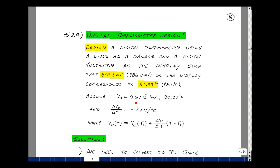Let's assume that the drop across the diode is 0.6V at 1 milliamp of current at 27 degrees C or 80.33 degrees Fahrenheit. In the Chapter 2 notes, we know that the temperature coefficient of a diode is minus 2 millivolts per degree C. In other words, the drop across it decreases as temperature increases. We could describe the voltage across a diode at specific temperature T by taking the value at reference temperature T1 plus the temperature coefficient times the change in temperature.